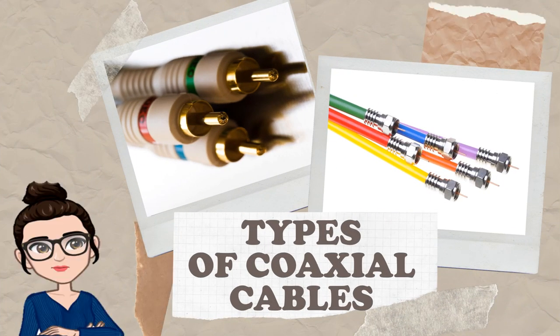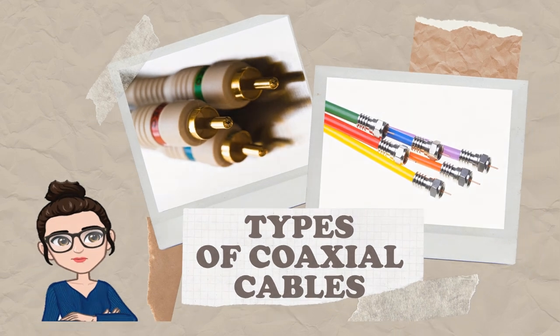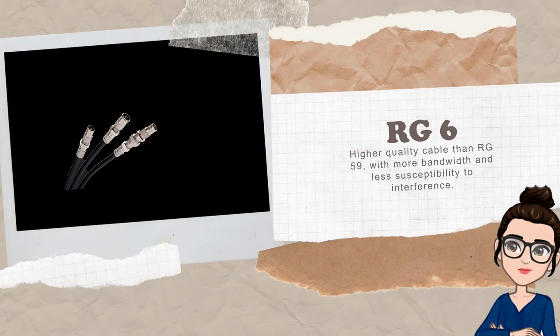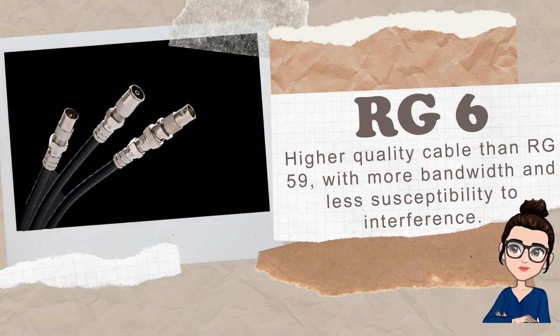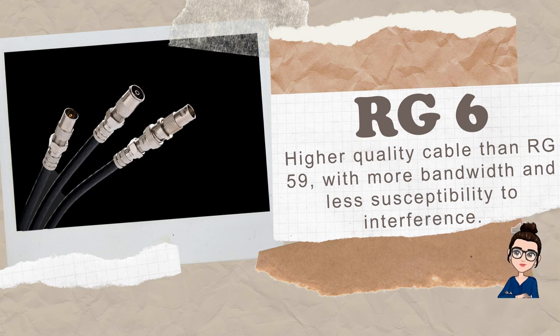Types of coaxial cables. The first type is RG6. RG6 is a higher quality cable than RG59 with more bandwidth and less susceptible to interference.